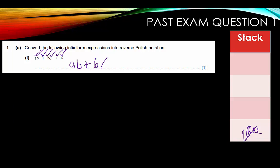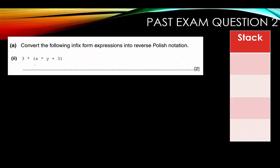Let's look at past exam question number two. We have 3 * (x * y + 3). No need to get nervous — simply remember the rules, follow them and you'll be fine. We have a three — not a mathematical symbol, so it goes into my string. Then the asterisk is a mathematical symbol for multiplication, so I push that to my stack. Then an open parentheses — push that to the stack. Then x is a variable, so that goes into my answer. Then another asterisk. I keep stacking, looking for the close parentheses.